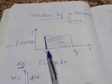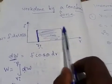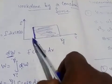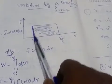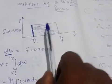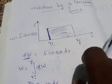This is the total work done. The graphical representation is given, and the area under this graph represents the work done by the constant force.